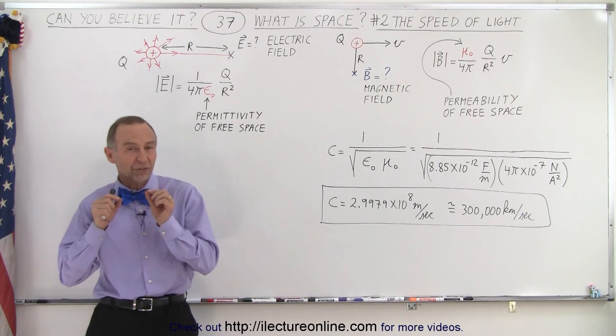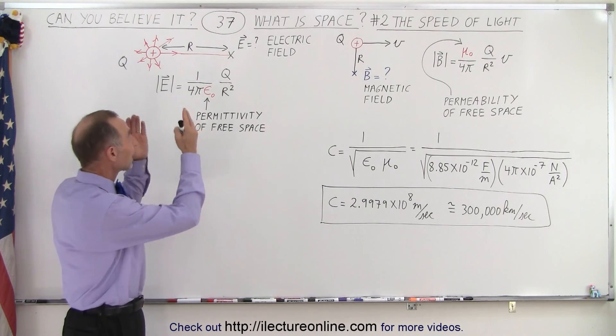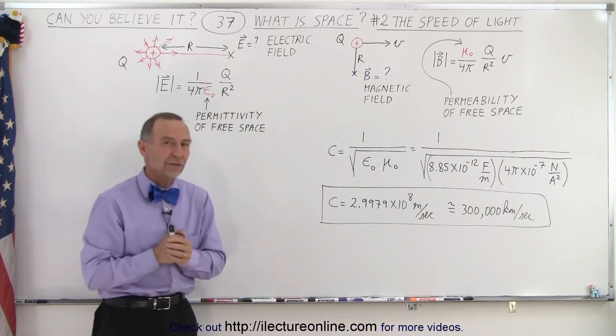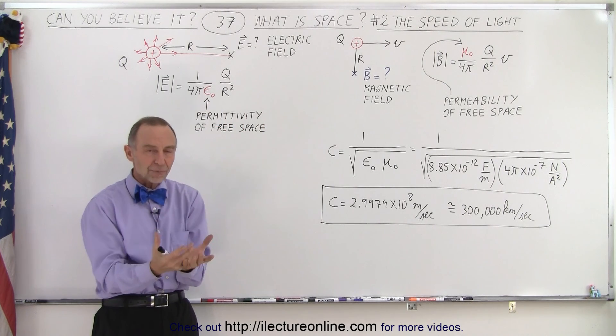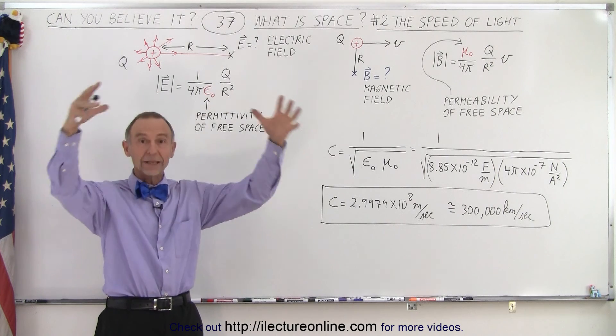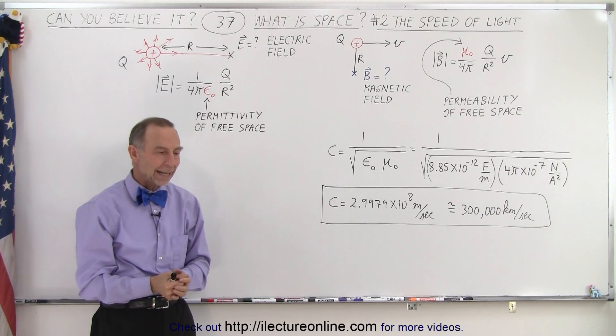An electric field is something that exists around any charge. Any object that has charge will create an electric field around it. Any charge that moves will create a magnetic field around it.